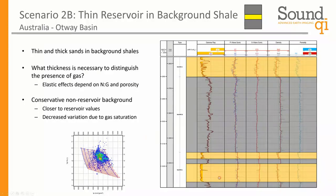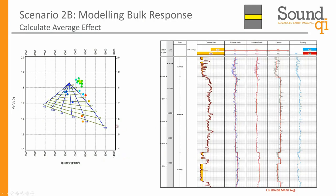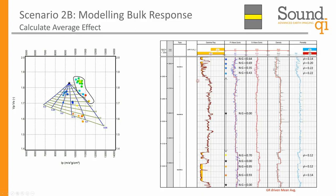We model the reservoir component the same way as before using rock physics modeling. For the background component, we're being a little more conservative — rather than choosing properties from the center of the shale distribution on a VP/VS versus P-impedance cross plot, we shift that closer to where the reservoir points would be, decreasing the variation we expect to see. Upscaling the logs and plotting those points colored by depth, we interpret net-to-gross from V-shale and porosity from logs, and compare with how things fit on the template. Especially for the upper layer, we're incredibly close between model predictions and interpretation from the logs.